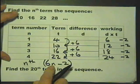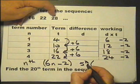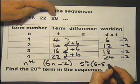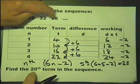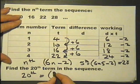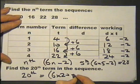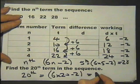Let's test this with the fifth value. The fifth value should be 6 times 5 subtract 2, which is 28. It works. So now I can find the 20th term. The 20th term will be 6 times 20 subtract 2. That's 120 subtract 2. That's 118.